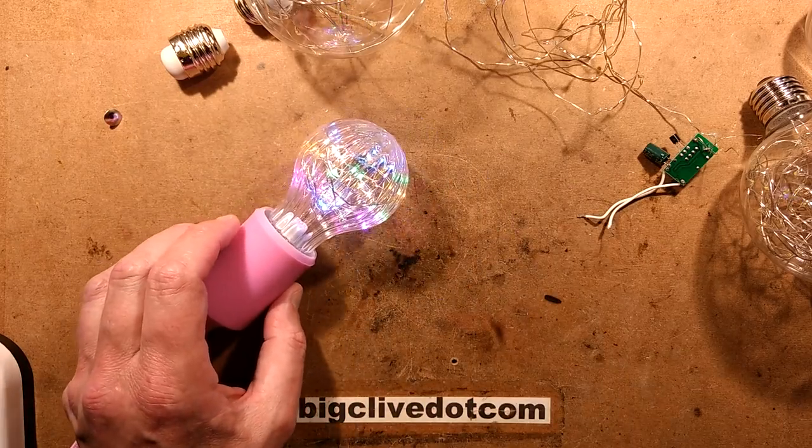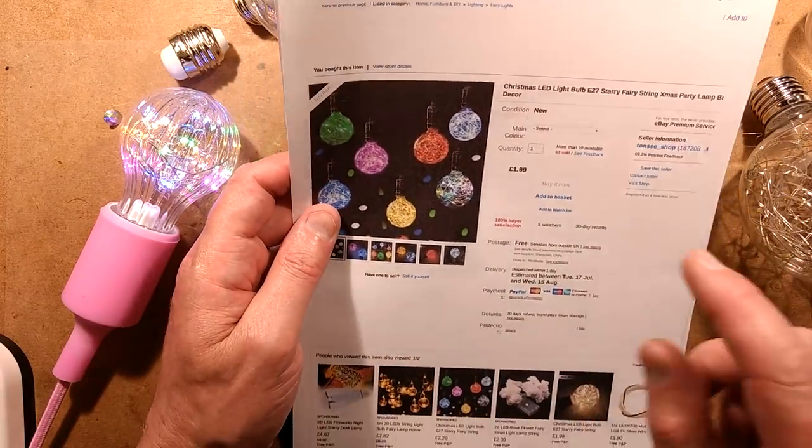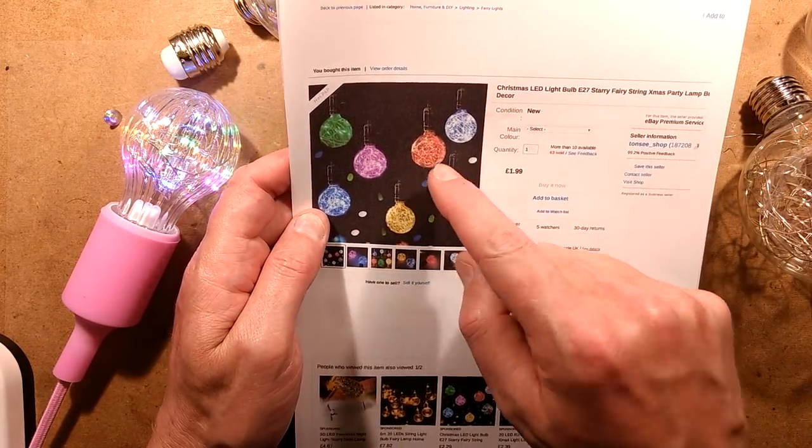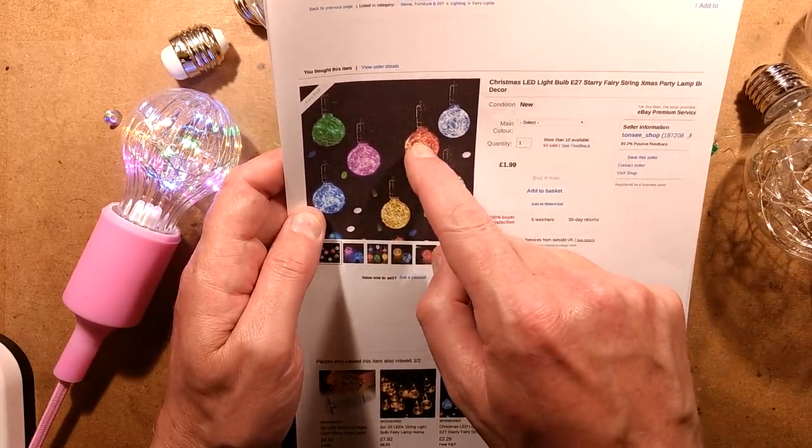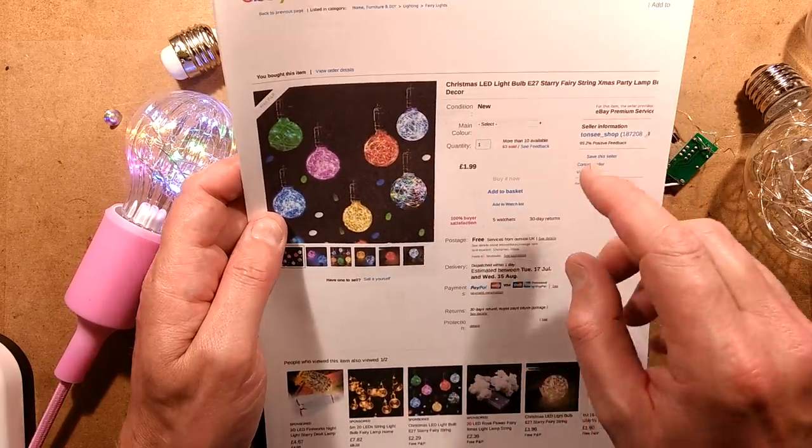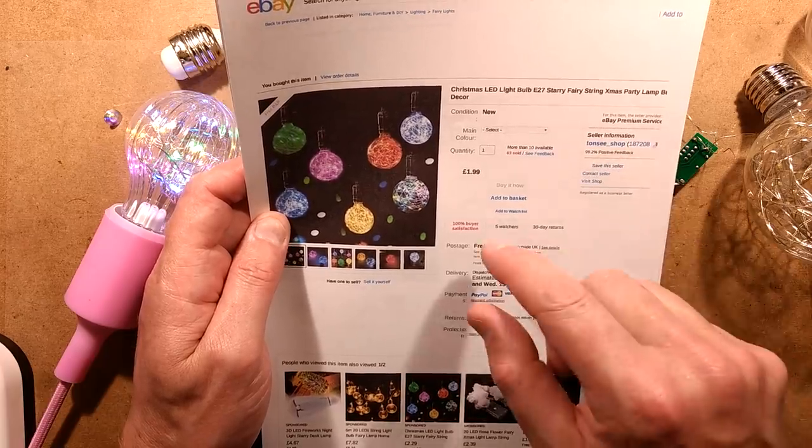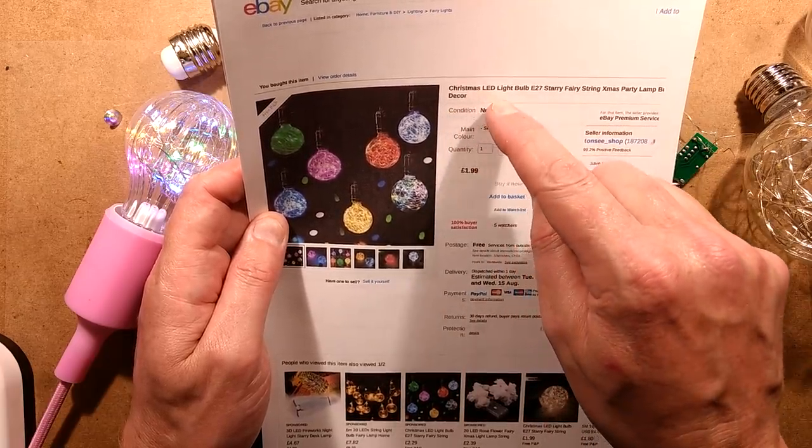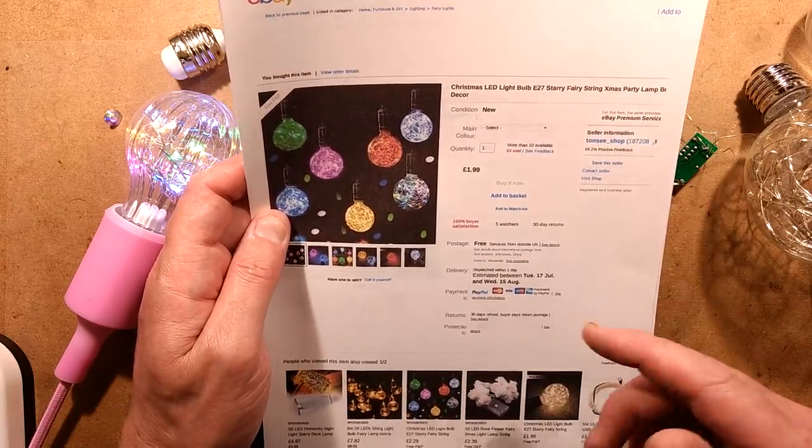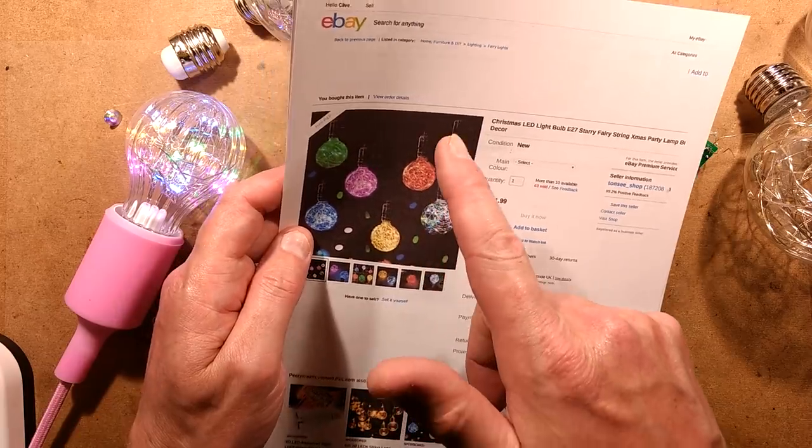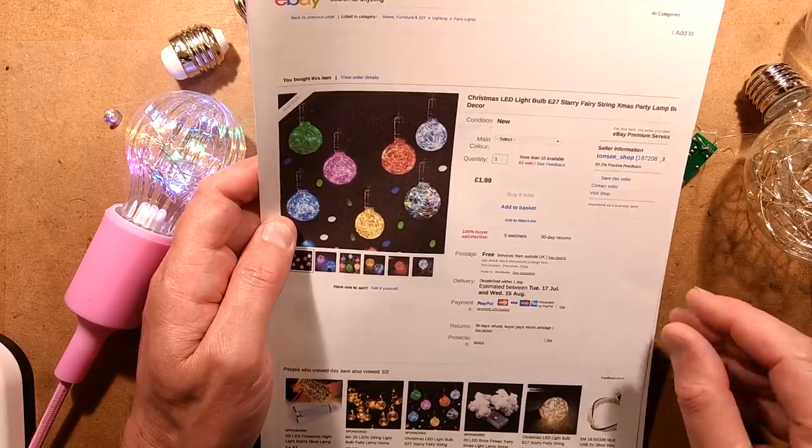Let me show you the listings. Let's start off with the deceiving listing because it's the large globe one and it shows you the original version with all the bunched up LEDs inside. It's certainly a lot more than 20 points of light in these. This is being sold by Tonsee_Shop, T-O-N-S-E-E Understroke Shop, and it's described as Christmas LED Light Bulb E27 Starry Fairy String Christmas Party Lamp. The price, £1.99, only relates to the warm white one. The other ones are all more expensive - I think it's a set of supply and demand that the price will fluctuate according to popularity.